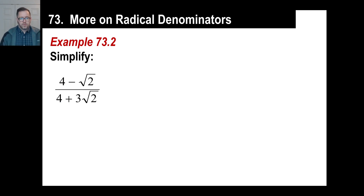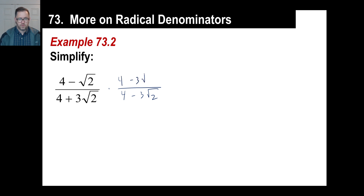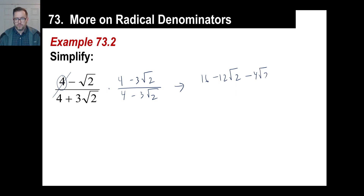Let's try another one. Copy this one down and see how you do — pause it and give it a whirl. That should be a minus — that's my bad. So the conjugate will be four minus three square root of two. We'll need to go ahead and do the four all the way across. Four times four is 16. Four times negative three gives negative 12 square root of two. Then negative square root of two times four is negative four square root of two. And negative times a negative is a positive — so we have three times the square root of four, which is two. Three times two is six.